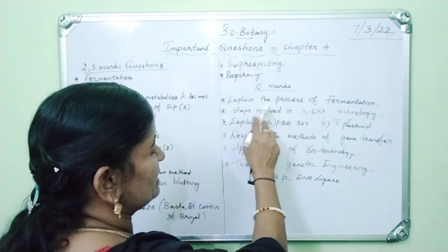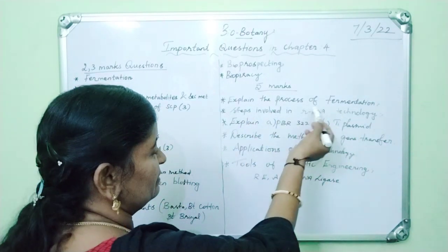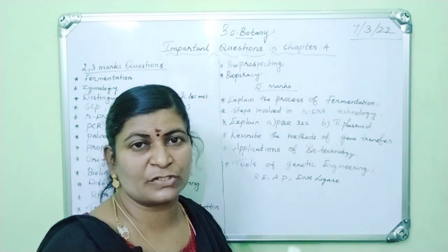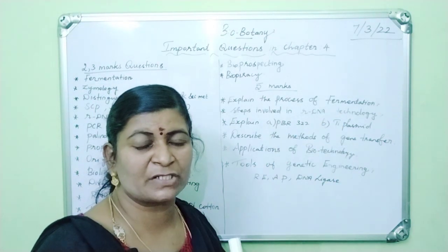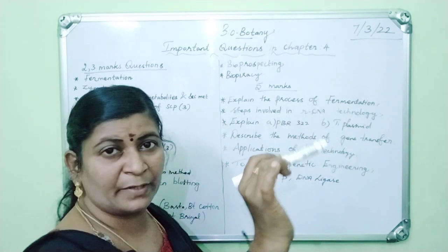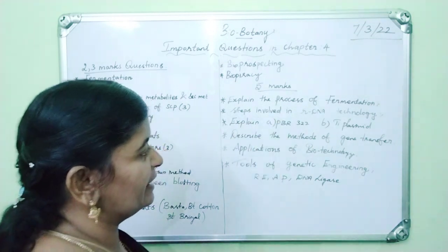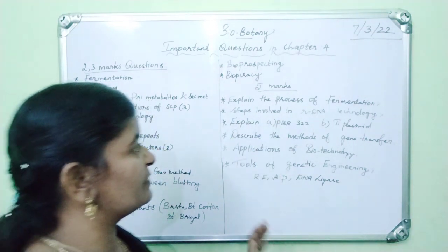Five marks - explain the process of fermentation. This is a five mark question. At that time you have to write a procedure also, along with upstream process, downstream process. Then process of fermentation, these things you have to write.